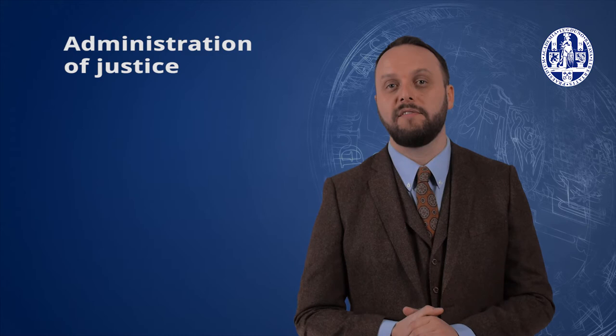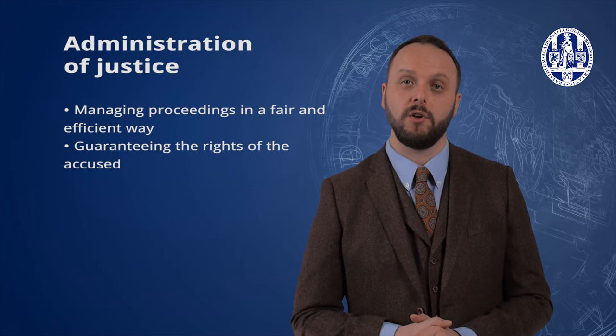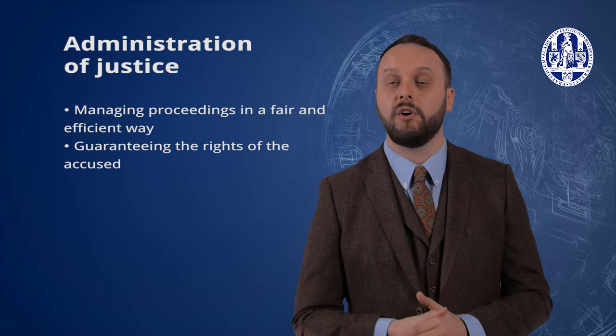The final role we will discuss is the judge's responsibility to ensure the proper administration of justice. This means they have to manage the proceedings in a fair and efficient way while also guaranteeing the rights of the accused. In short, there must be a judicial process so that justice is not only done, but is very clearly seen to be done. Central to this judicial process are the rules of procedure and evidence. At the Yugoslavia and Rwanda tribunals, the judges could draft and amend their own rules to respond to new or overlooked issues. At the ICC, that role is reserved for the assembly of states parties.